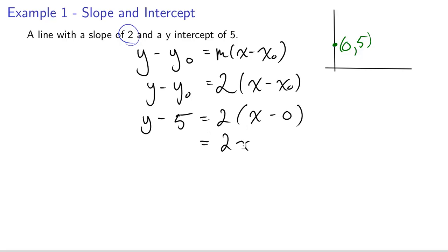From here, all we need to do is algebra to get it down to y = mx + b. First, we want to distribute the 2: 2x minus 2 times 0, y minus 5. Then we're going to move the 5 over by adding it to the other side. We get y = 2x + 5.